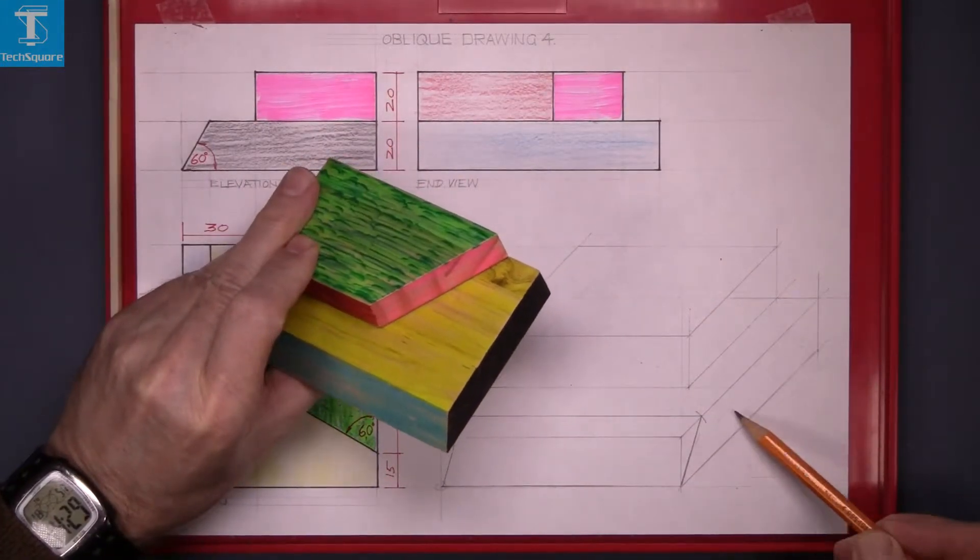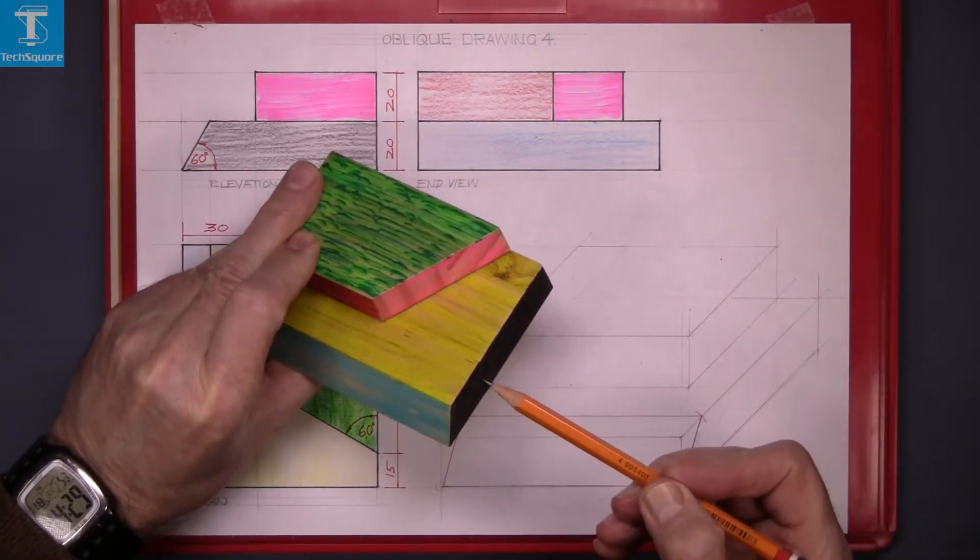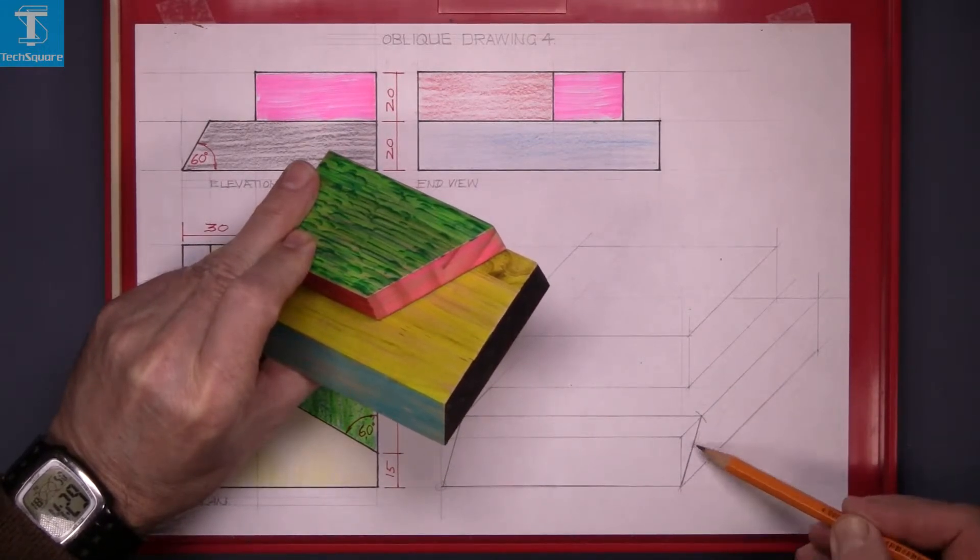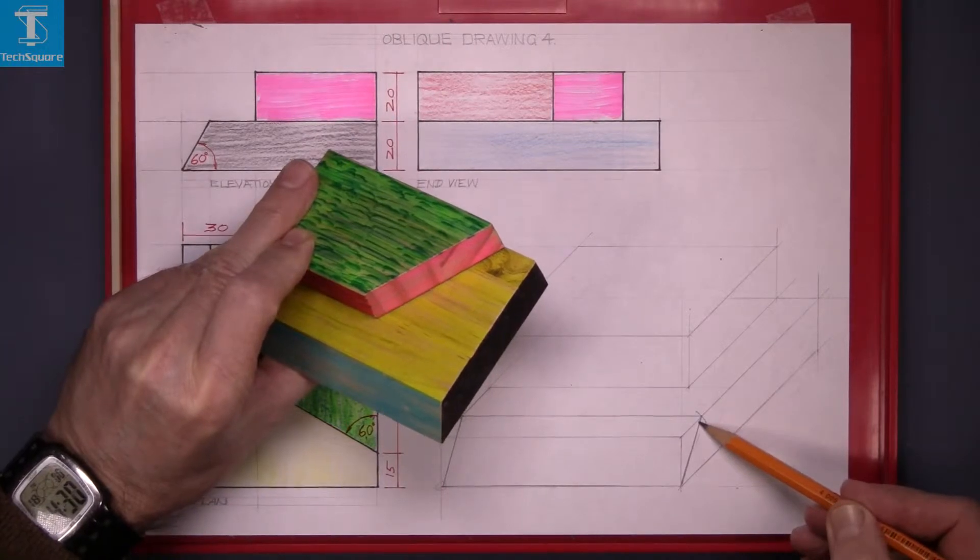So that's the end there, which is the black surface there, and that cut there is the 60-degree angle there in oblique.